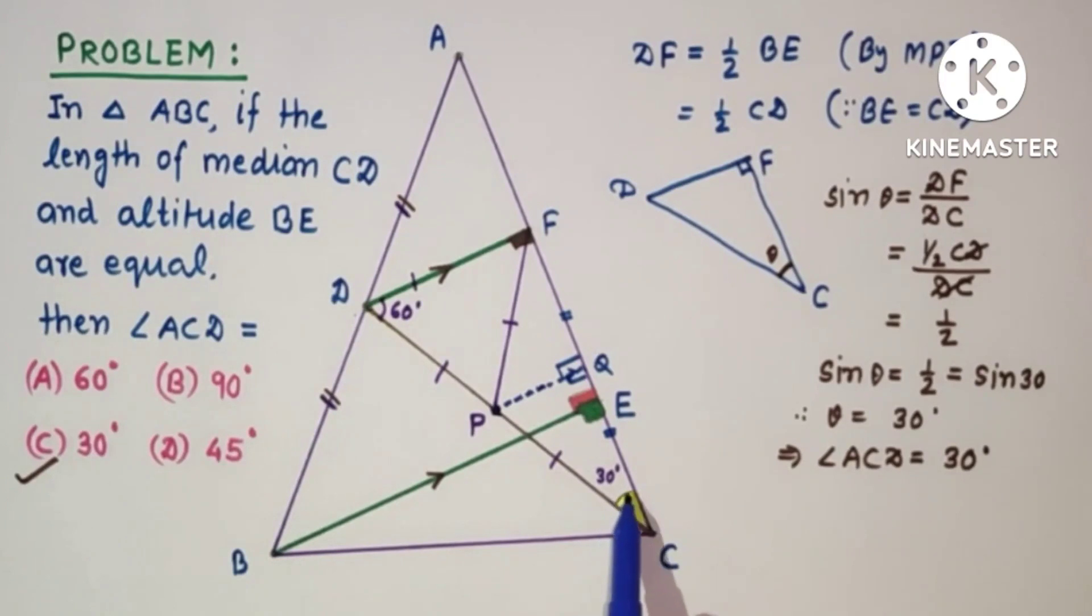This is 60 and then this is 30 degrees. So finally we found angle ACD is equal to 30 degrees.